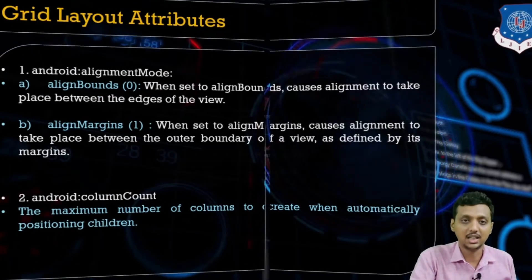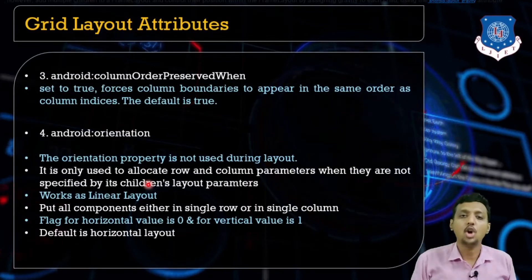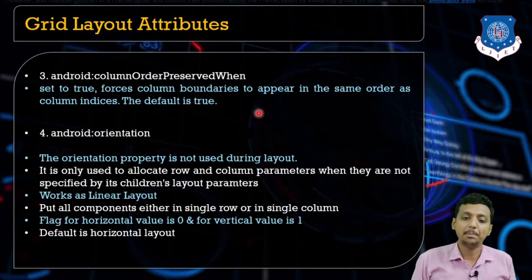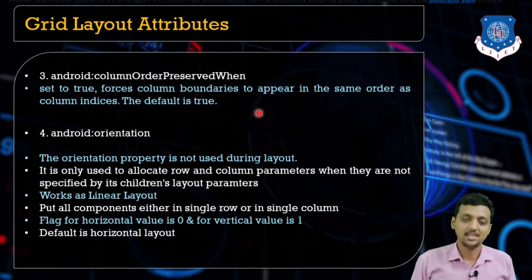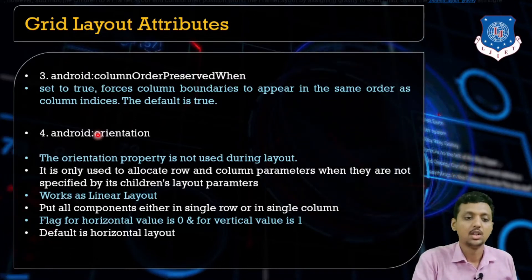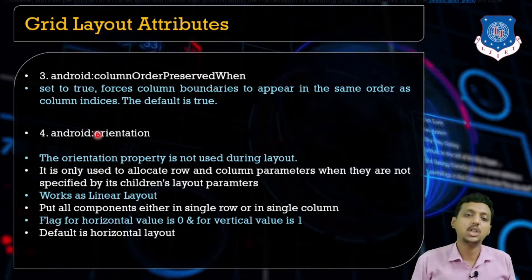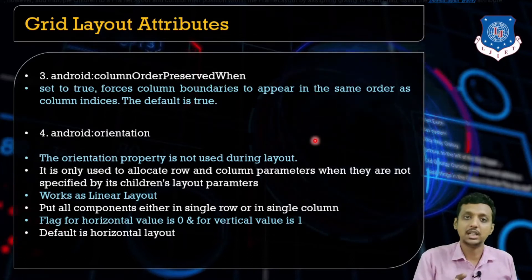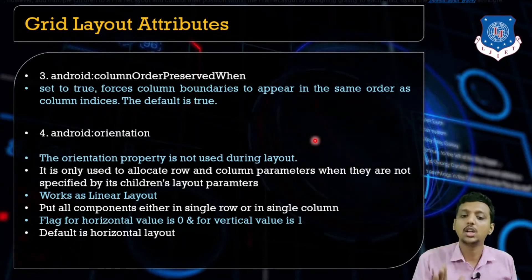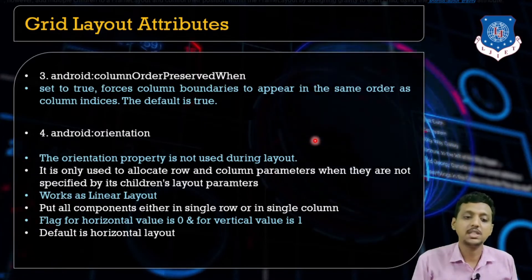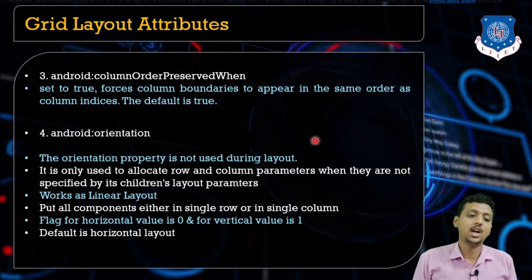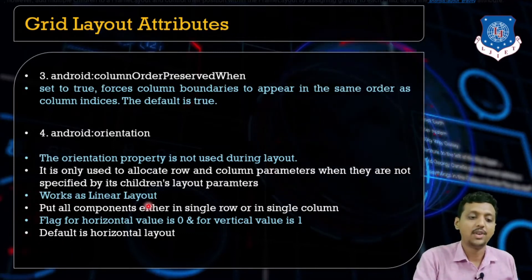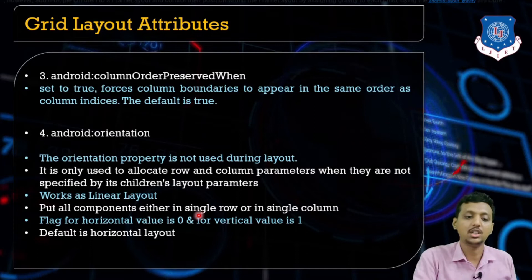The columnOrderPreserved attribute, when true, forces column boundaries to appear in the same order as column indices; by default it is true. For orientation, you can set it the same as LinearLayout. The orientation property is not used during layout but is used to allocate row and column parameters when not specified by children's layout parameters. It works like LinearLayout, placing components in a single row or column. For horizontal, the flag weight value should be zero.